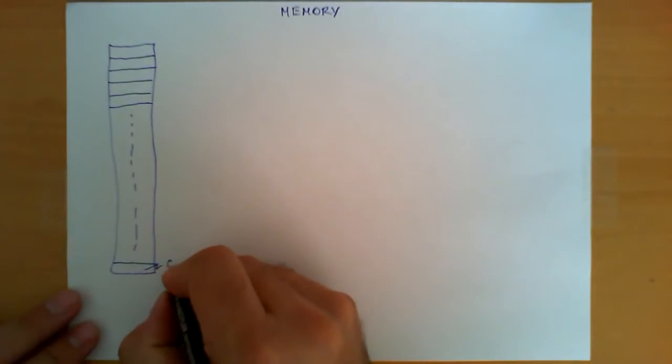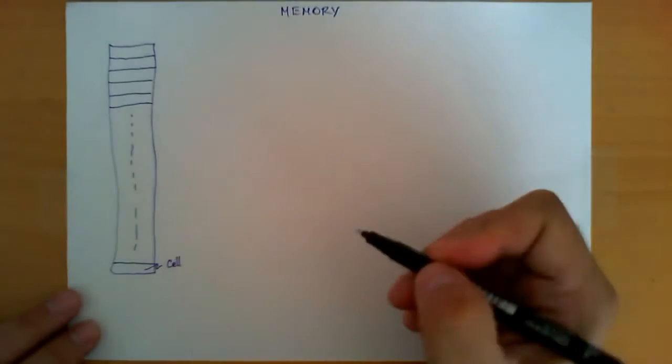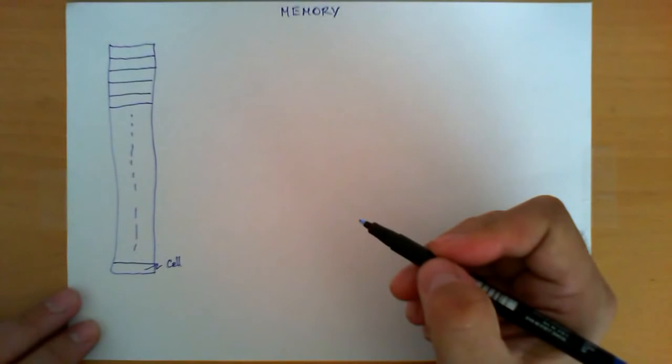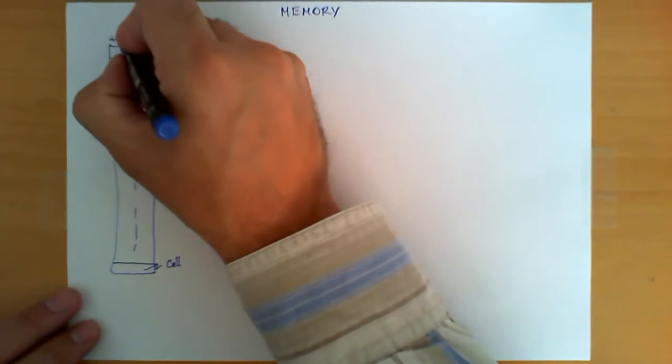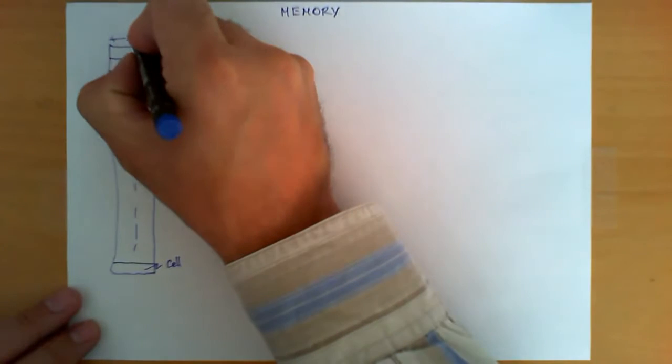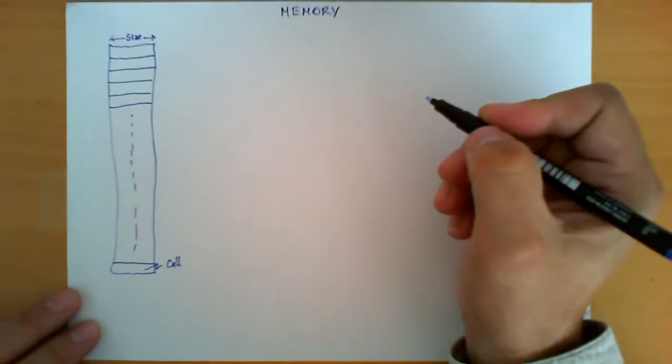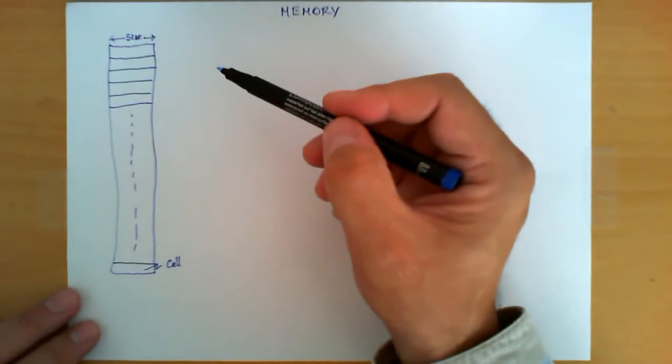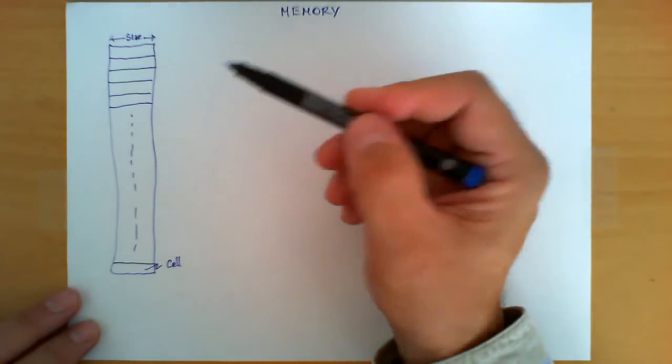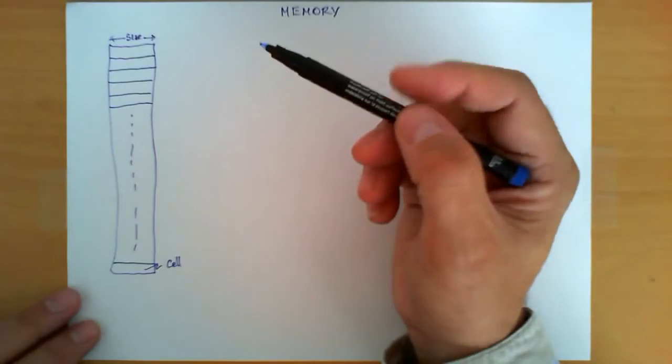First, each one of these boxes we call a cell, and it has the property of being able to remember, that's why we call it memory, remember one value. What kind of value does it remember? This is what we call the size of that cell, and typically the sizes of these cells are one byte, two bytes, and so forth, but typically the most typical one is one byte size.